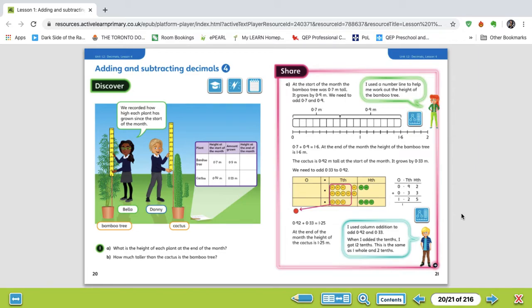So this fella here says that he used column addition to add 0.92 and 0.33, and when he added the tenths, he got 12 tenths, and that's the same as one whole and two tenths. So don't forget that.